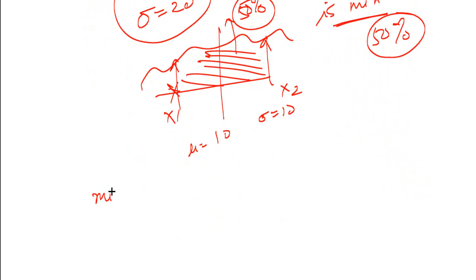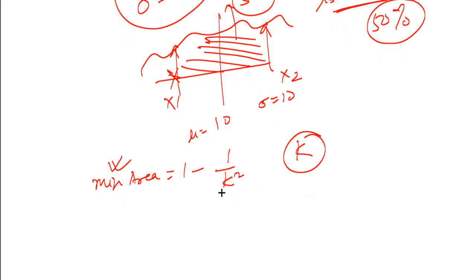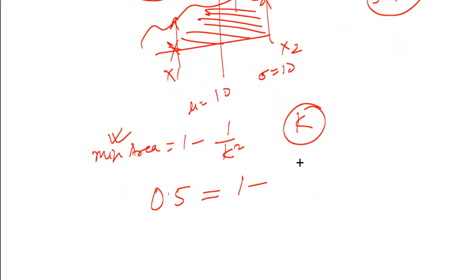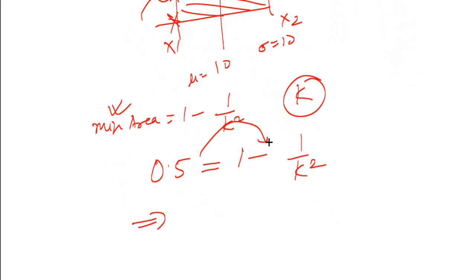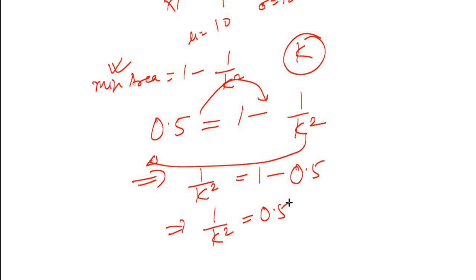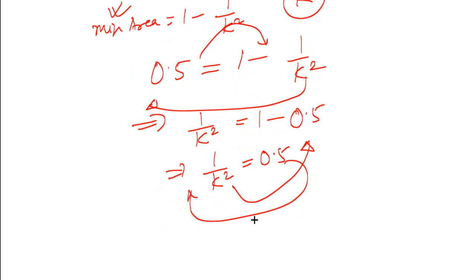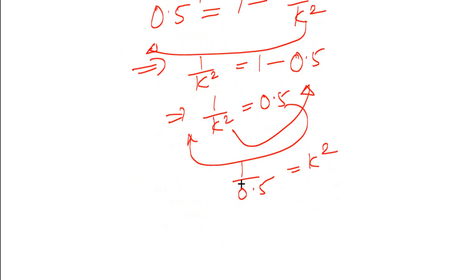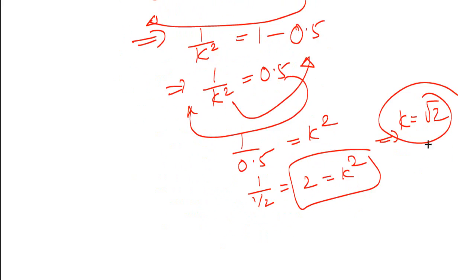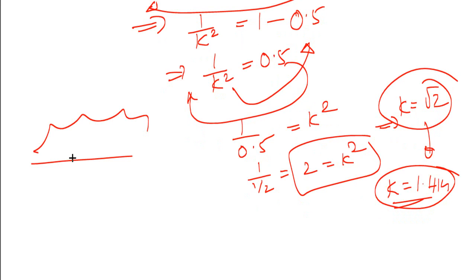To solve this, you know the minimum area formula is 1 minus 1/k². Here k is not given — you have to find it. Set 0.5 = 1 minus 1/k². Rearranging: 1/k² = 1 minus 0.5 = 0.5, so k² = 1/0.5 = 2, therefore k = √2 ≈ 1.414. Note that k is plus/minus √2, so it is plus/minus 1.414 standard deviations from the mean.